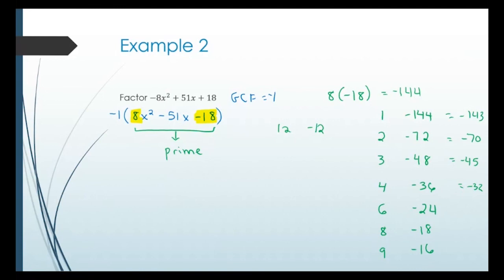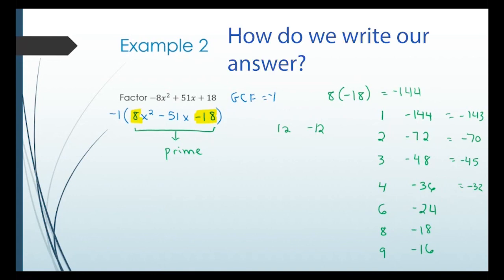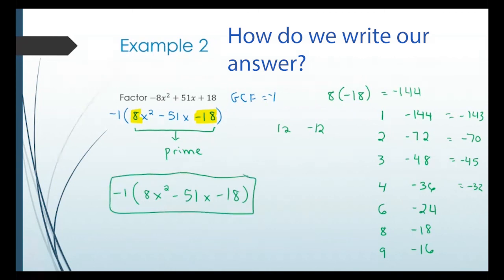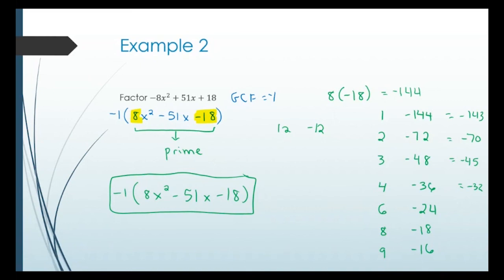That means our answer is just negative 1 times 8x squared minus 51x minus 18. Sometimes these things can't be factored further, so you have to go through the process and check every combination to determine it's prime. In this case, since we did factor out a negative 1, the answer is that expression with negative 1 factored out — it's prime inside. The term 'relatively prime' is something different, used when looking for GCF.